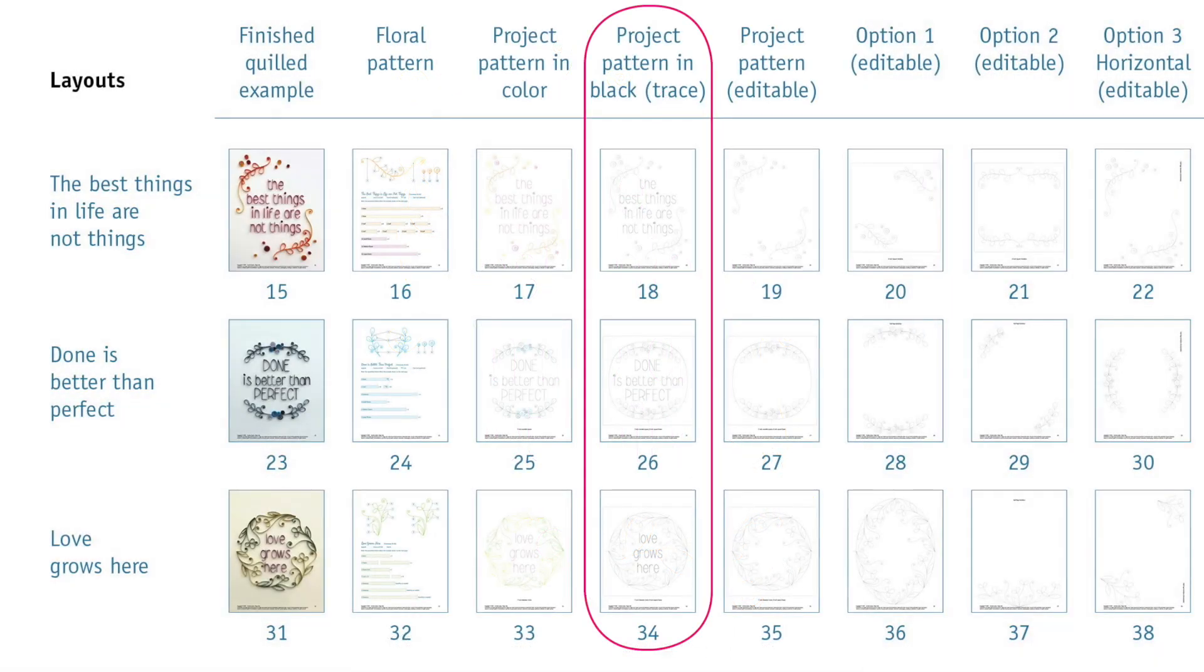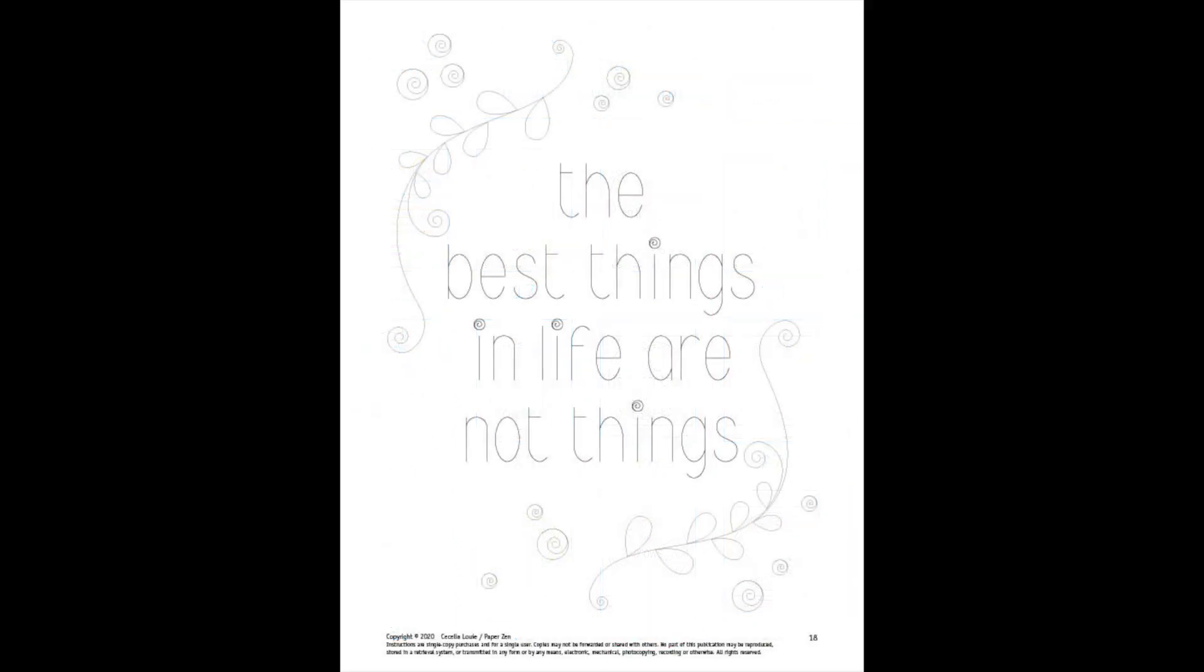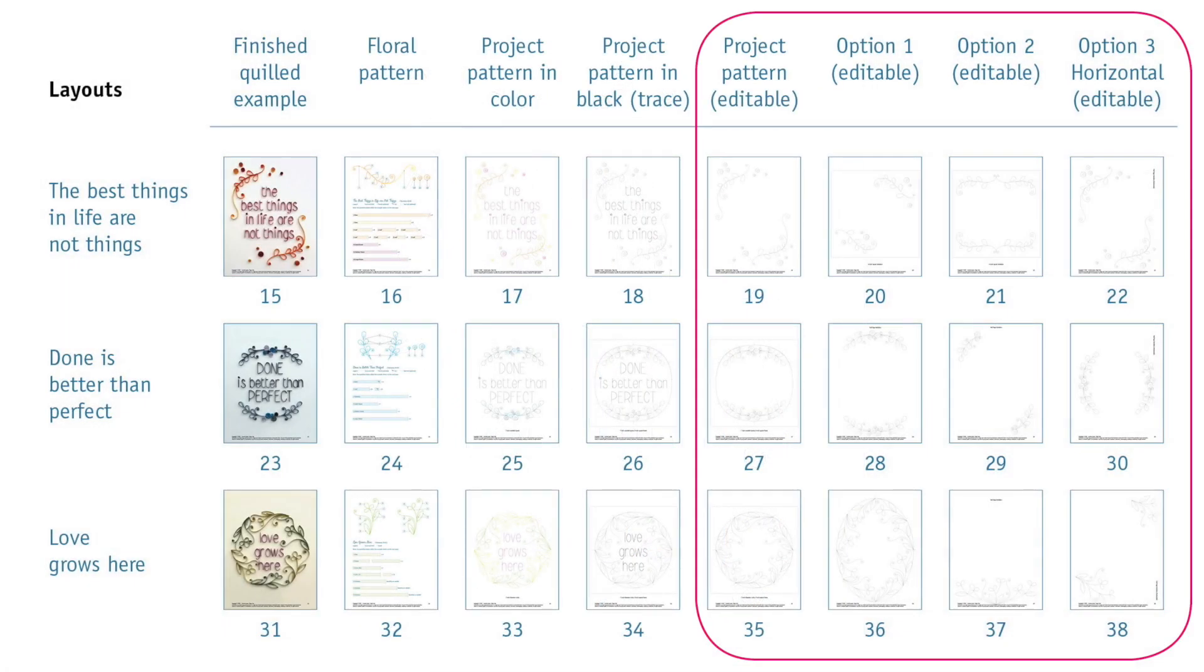The next four columns are all editable so you can type in them. The first editable page has the floral elements in the same layout as you see in my project. Then for the next three options I've taken the floral elements and moved them around on the page to give you new options for your phrases. Some are square, some are horizontal. I've tried to give you several options to work with.